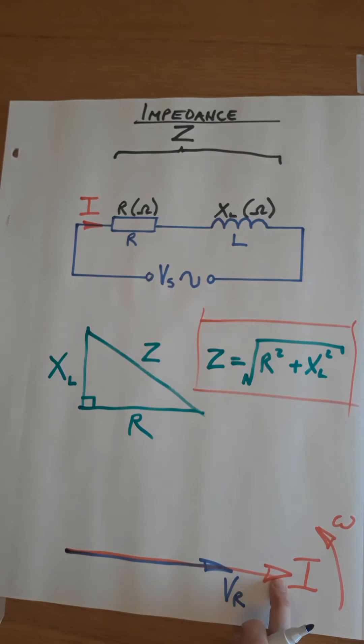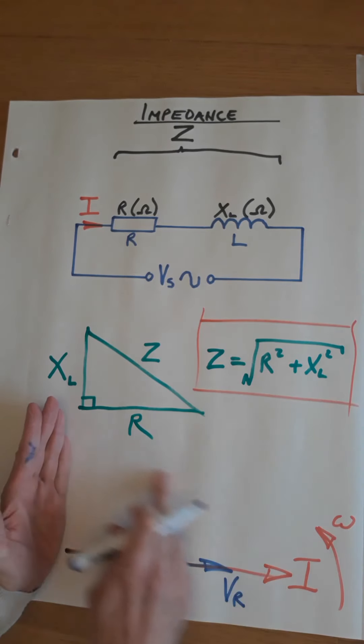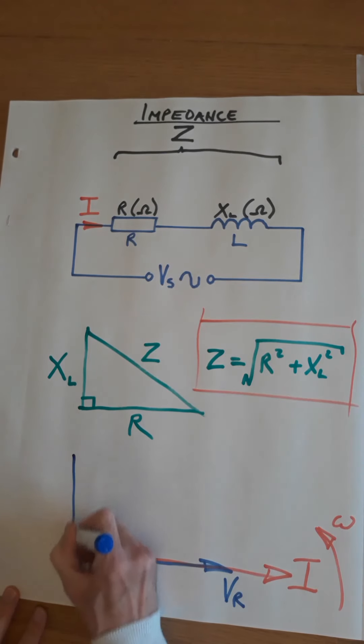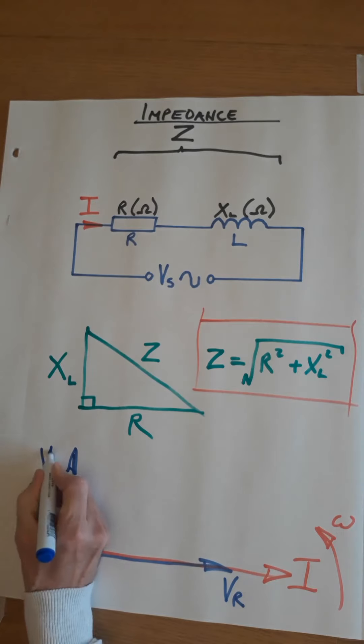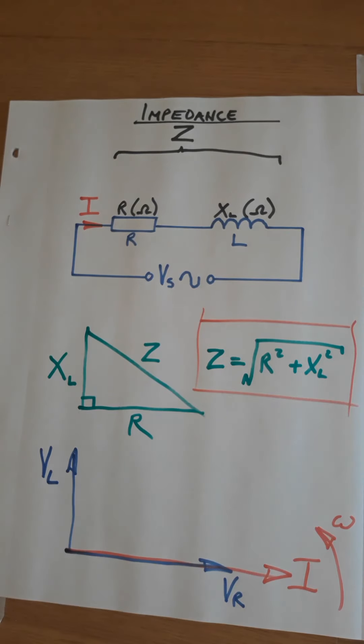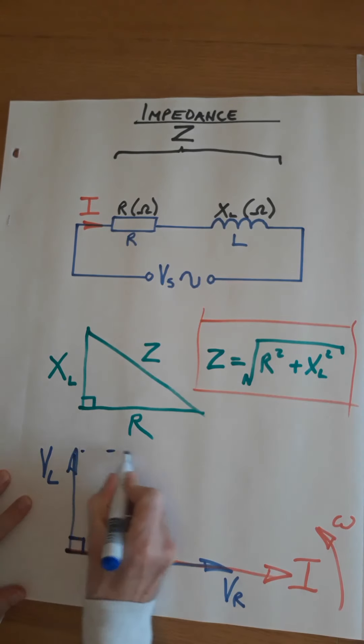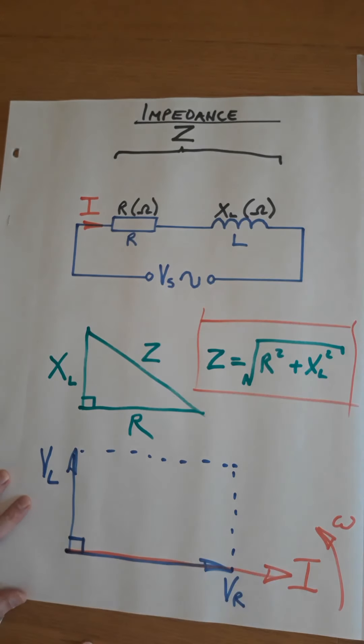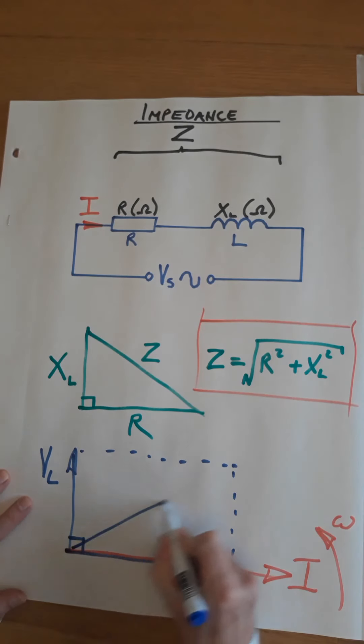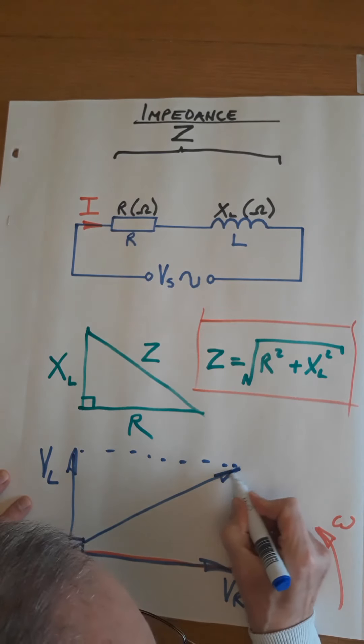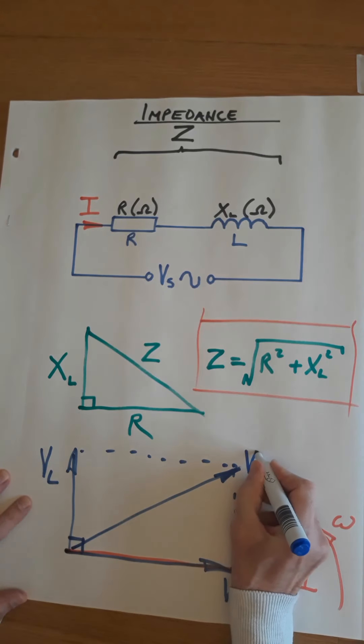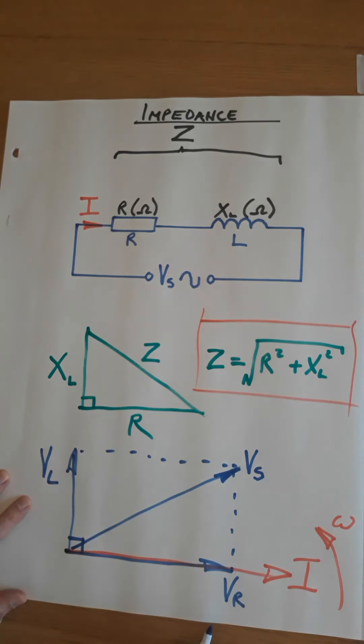So that's the beginnings of my phasor diagram. To continue the phasor diagram we need to plot the voltages on it. So we need the voltage across R, and ask yourself the question: what's the relationship with voltage and current in a resistor on an AC circuit? They're in phase. So that means the voltage across the resistor appears there, in phase with the current.